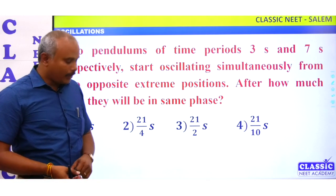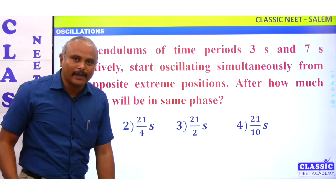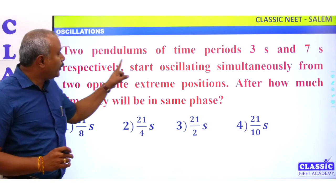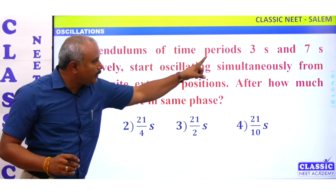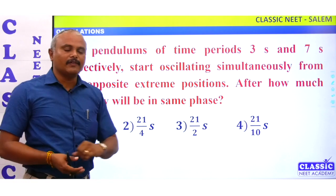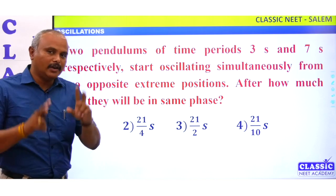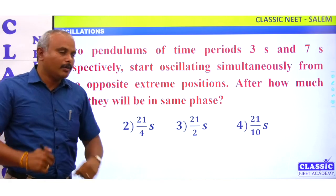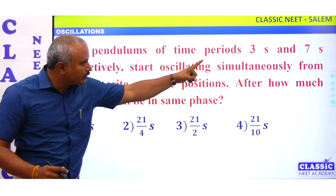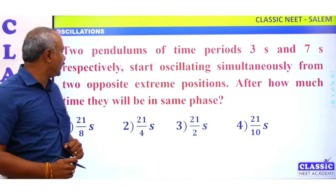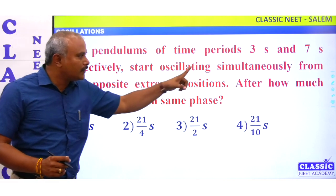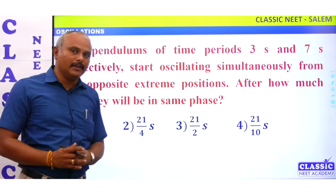Now let's go to the problem. Two pendulums of time period three seconds and seven seconds respectively start oscillating simultaneously.